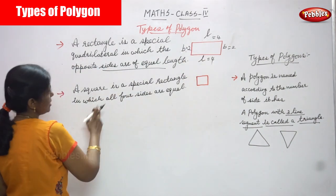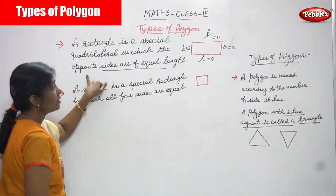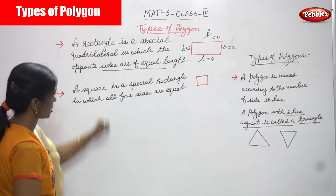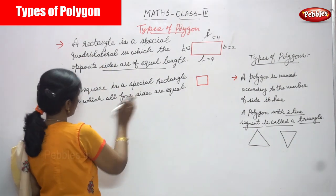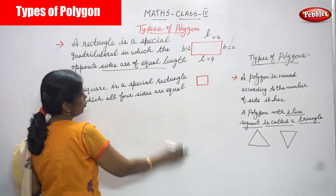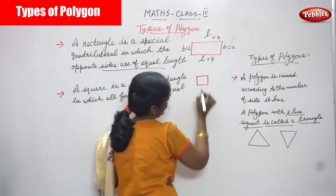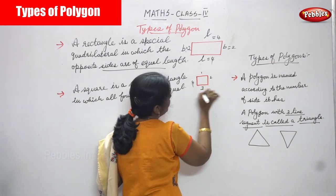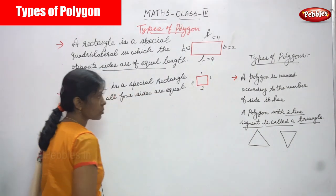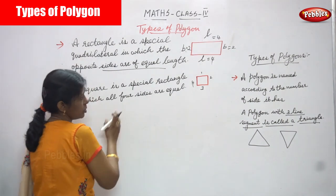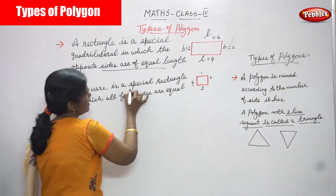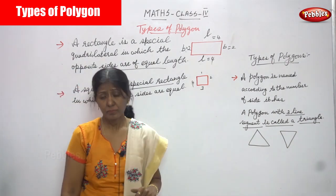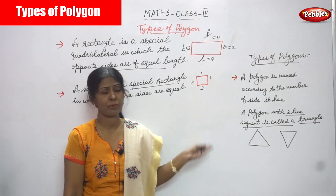Next, a square is a special rectangle. A rectangle is a special quadrilateral, and a square is a special rectangle in which all four sides are equal — side 1, 2, 3, and 4 are all equal. That is called a square. It is also a type of polygon, and a square is always a special rectangle, so it also comes under types of polygons.